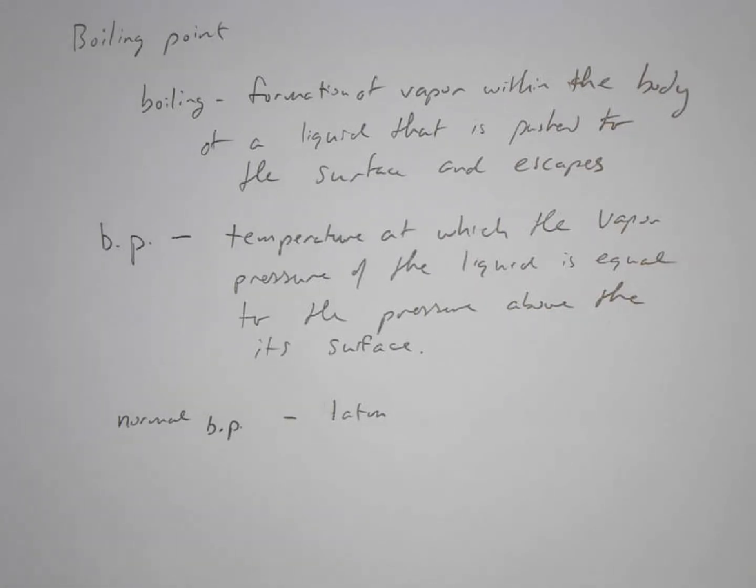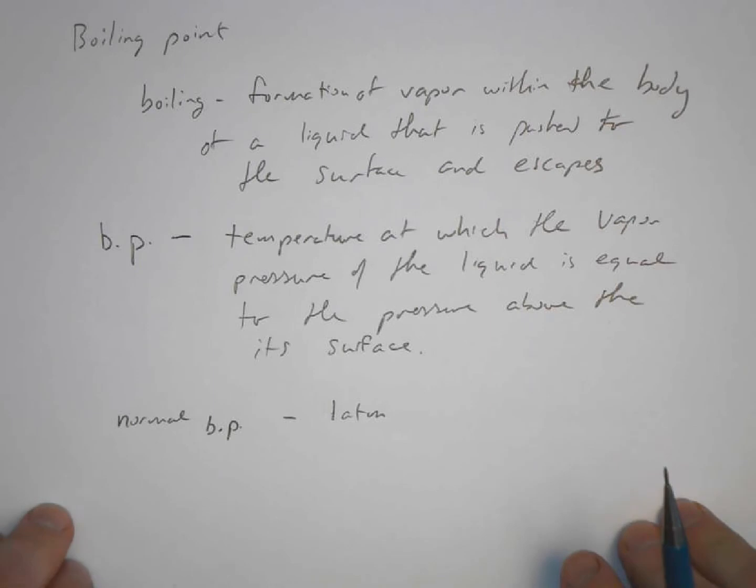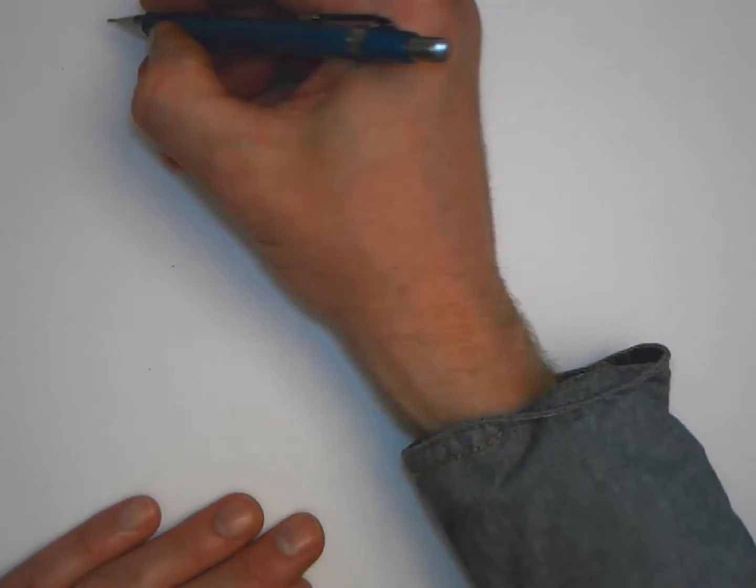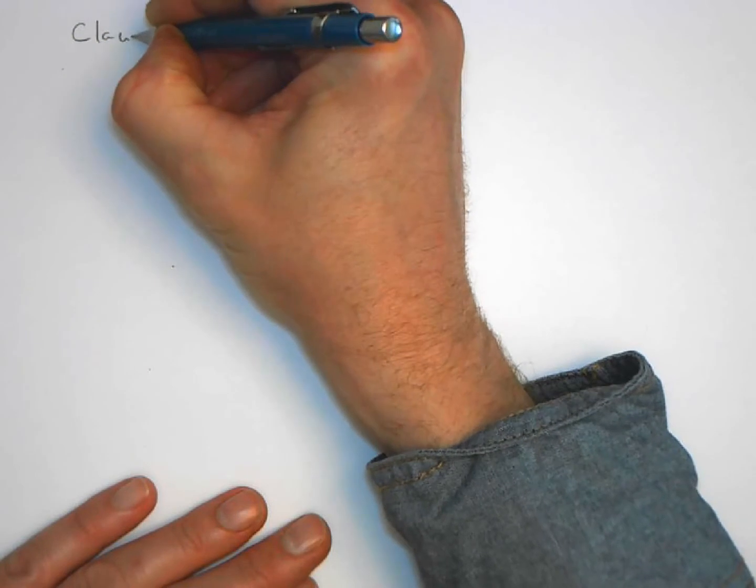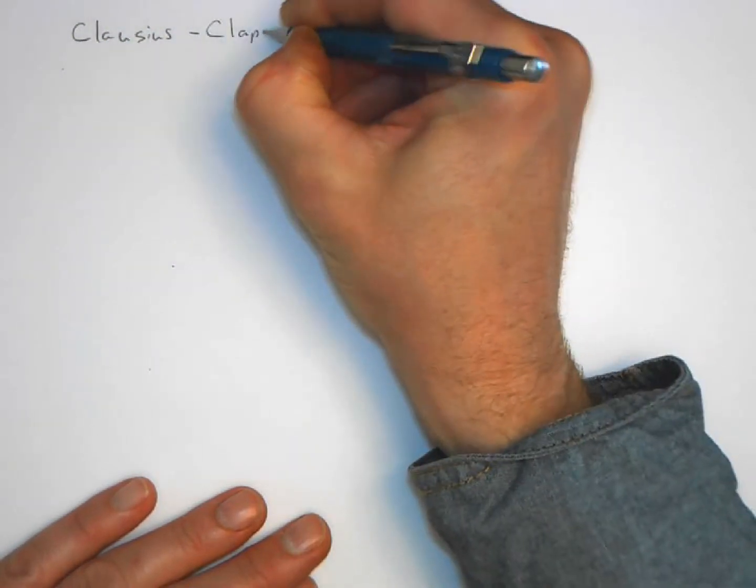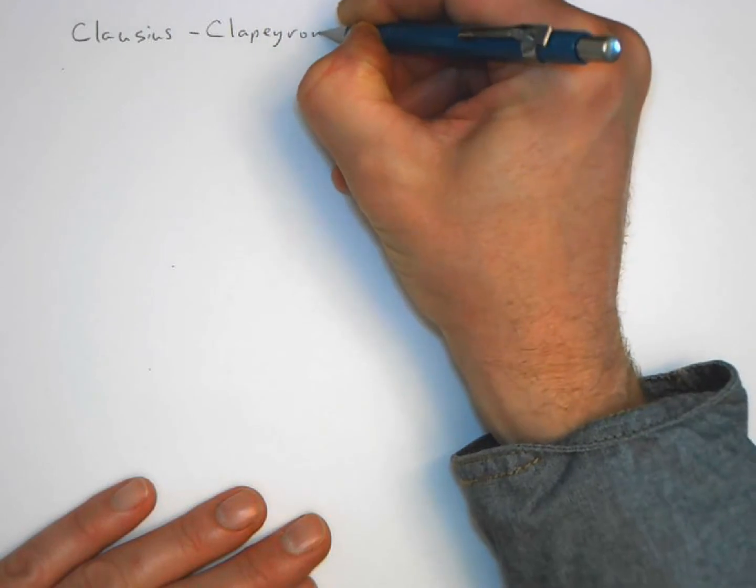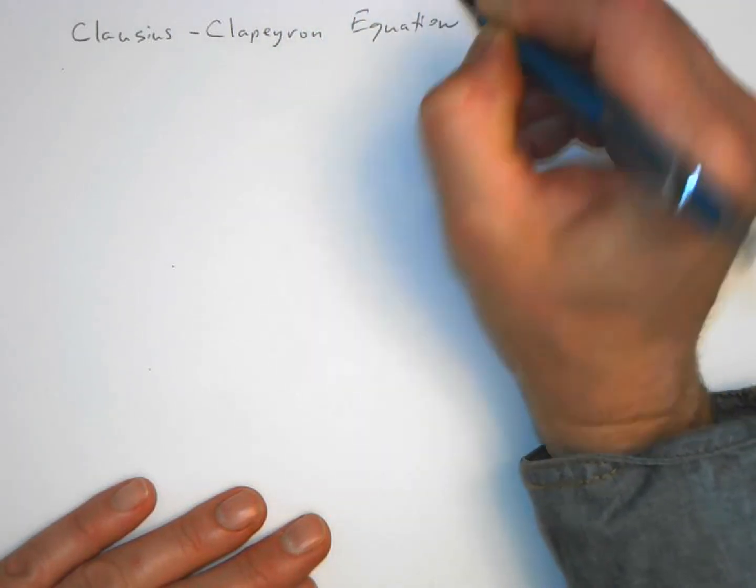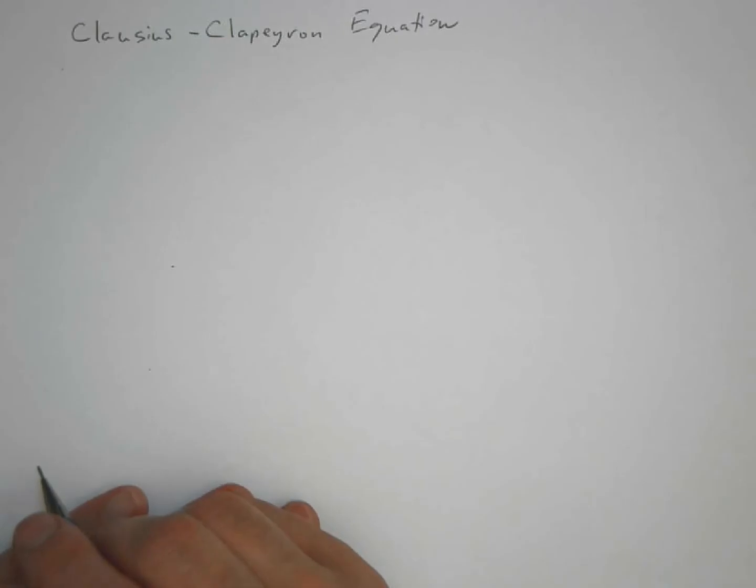Now to be able to quantify this, there is an equation that we can use to figure out what the vapor pressure is for different temperatures. So let's look at this. This is the Clausius-Clapeyron equation.